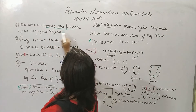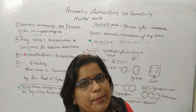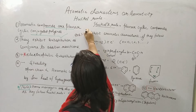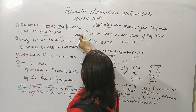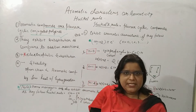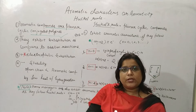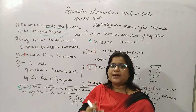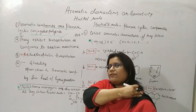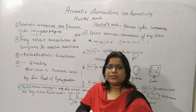Aromatic compounds are planar cyclic conjugated polyenes. Polyene means multiple double bonds — 'ene' means double bond, and 'poly' means more than one double bond. Conjugated means the double bonds are present alternately, one by one.